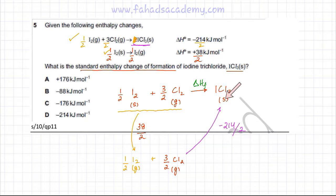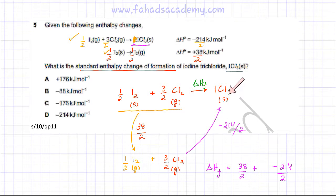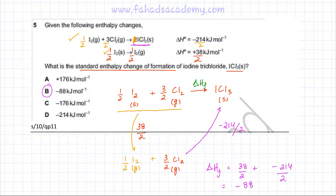The enthalpy of formation equals the sum of the alternative path: 38/2 + (−214/2). Going from the first intermediate to the second is 38 ÷ 2, then from there to the product is −214 ÷ 2. Calculating this gives the answer of −88 kJ/mol, which corresponds to option B.